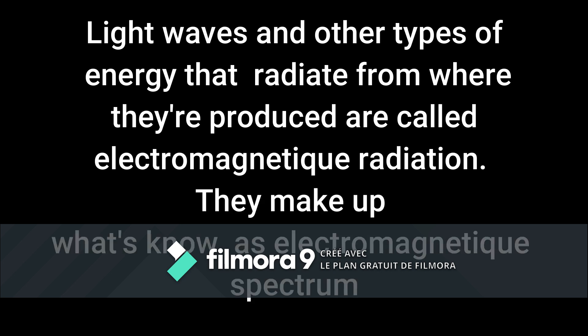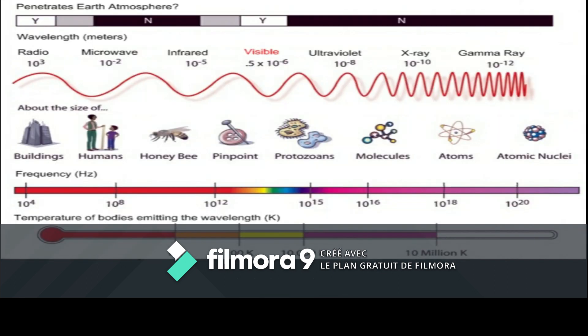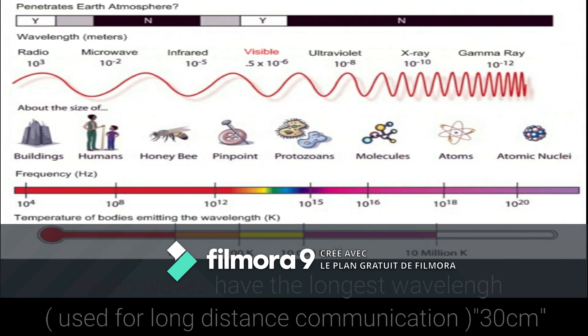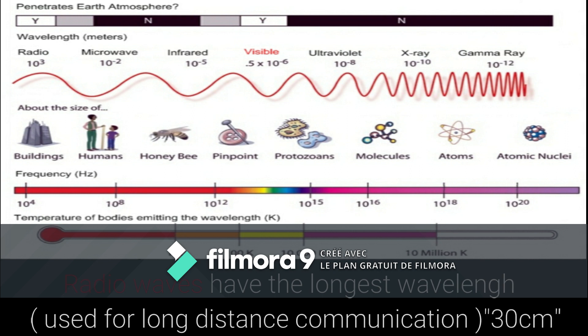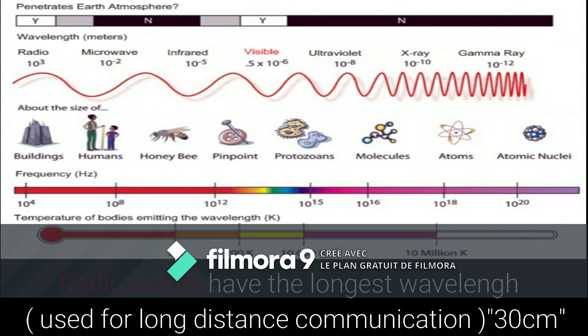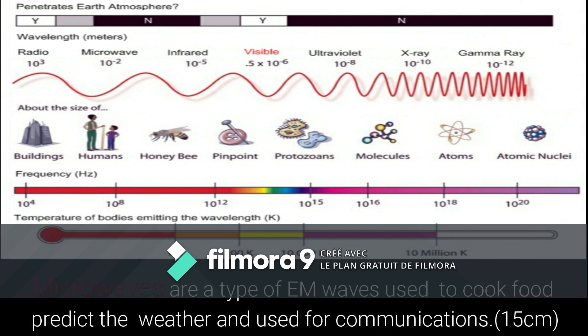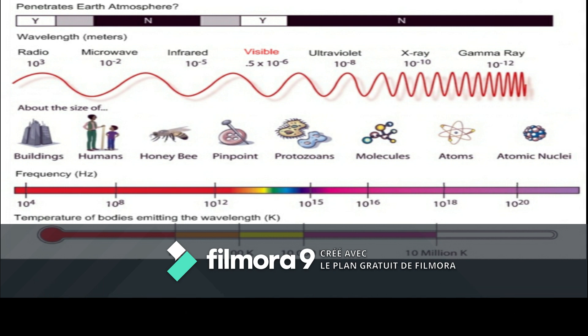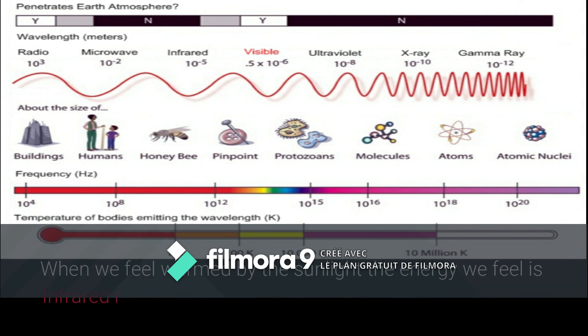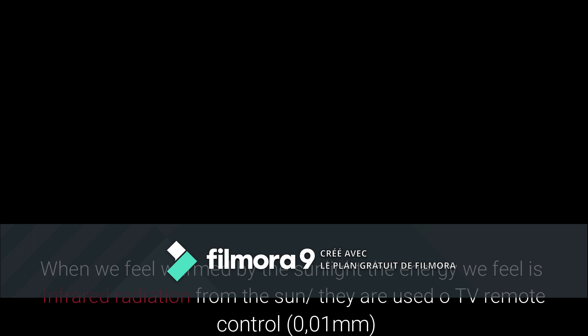Light waves and other types of energy that radiate from waves are called electromagnetic radiation. They make up what's known as the electromagnetic spectrum. Radio waves have the longest wavelengths and are used for long distance communication. Microwaves are a type of EM waves used for cooking, predicting weather, and communications. When we feel warmed by sunlight, the energy we feel is infrared radiation from the sun.